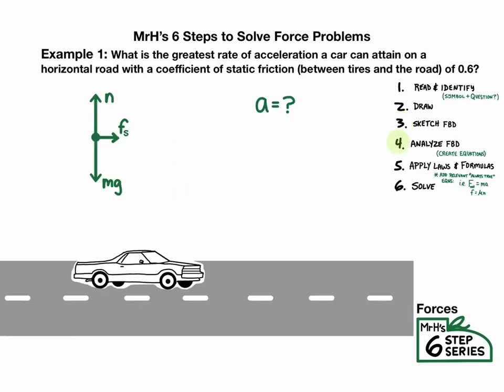Now step four is to analyze the free body diagram to create our own equations. So we consider that the acceleration was forward, which means there should be net force of zero in the vertical direction. So I'm able to say that normal force is equal to mg. I can also see that if I add up the sum of all of these forces, the net force is going to be static friction. So I can make another equation that says net force equals static friction. And that's the end of step four.